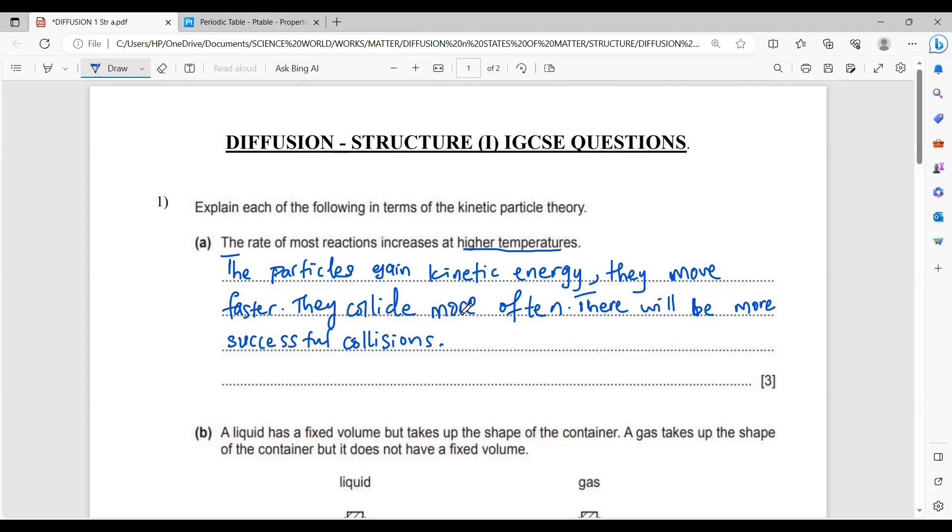And you could also say there will be more particles with energy greater than the activation energy. And your activation energy is that minimum amount of energy for a chemical reaction to occur. Better still, the minimum amount of energy for the reactants to react in order to form products or to be converted to your product.